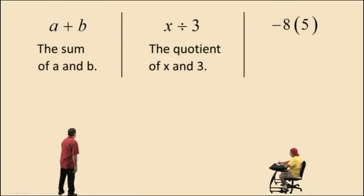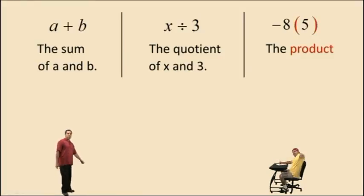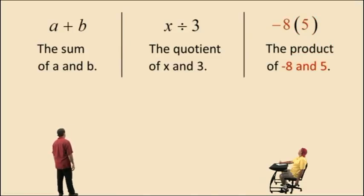Okay. Now, negative 8 times 5. Charlie, is this a product, a quotient, a sum or a difference? Product. Very nice there, Charlie. It is the product. Now, what two things are we taking the product of here? It is a negative 8 and 5. So there you go.